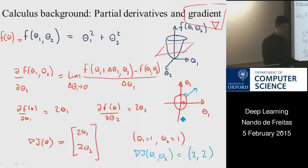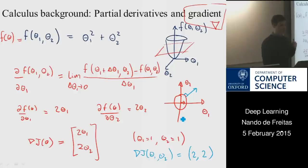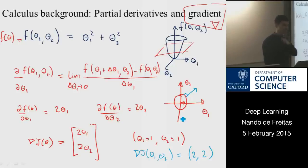You can verify that the gradient is always perpendicular to the tangents of the level curves — that's a basic fact from calculus. The gradient indicates the direction of maximum change. If you want to minimize, you go in the opposite direction of the gradient. If you want to maximize, you go in the direction of the gradient. The gradient points to the steepest ascent.